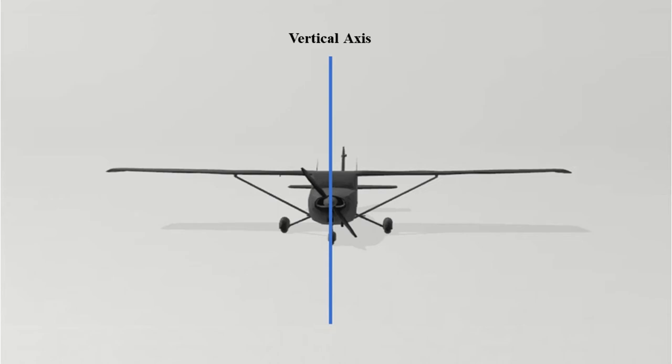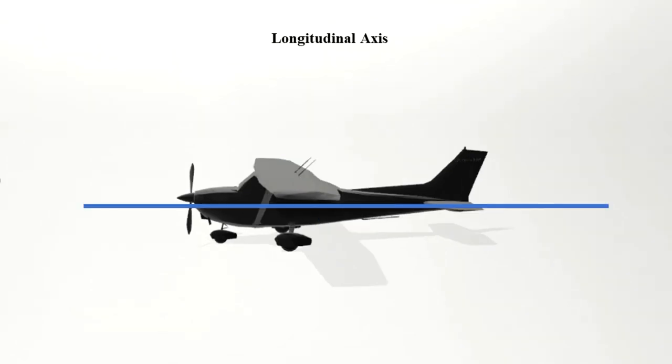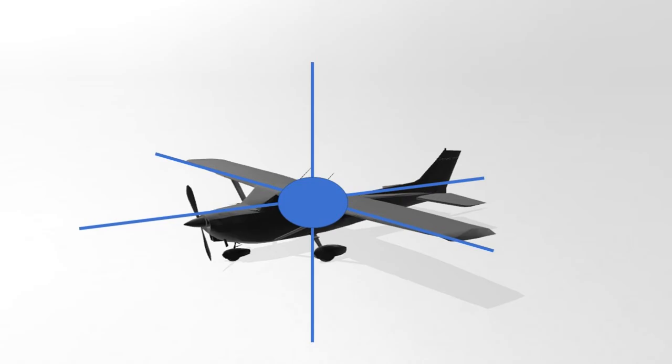These axes are designated as the vertical axis, lateral axis, and longitudinal axis. These axes move with the vehicle and rotate relative to the earth along with the aircraft. In a quadcopter, these rotations are produced by torque about the principal axes.